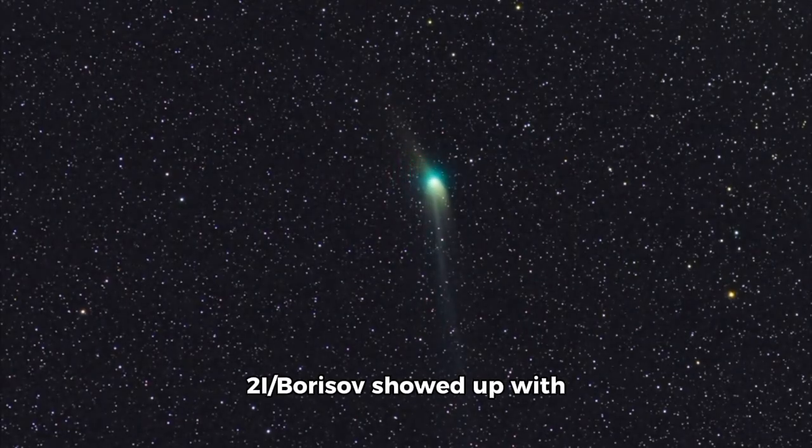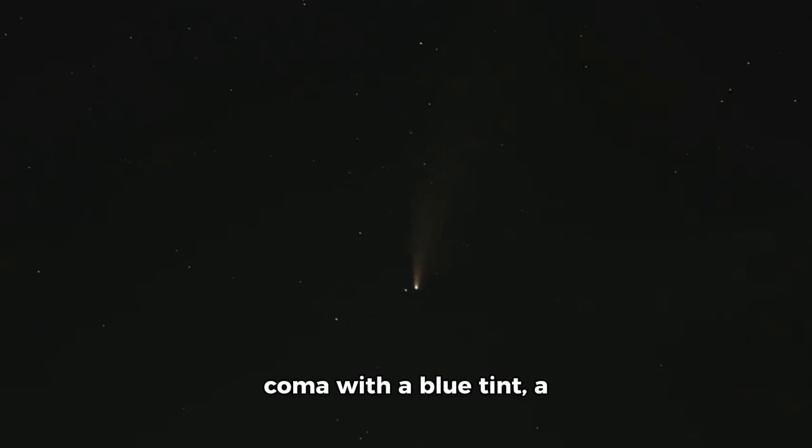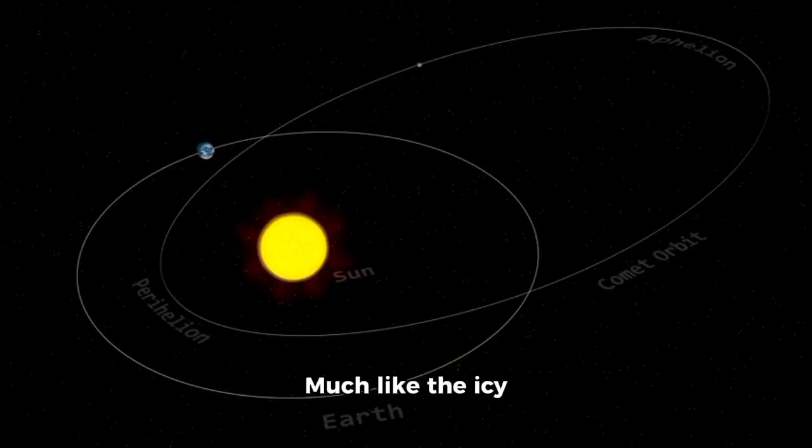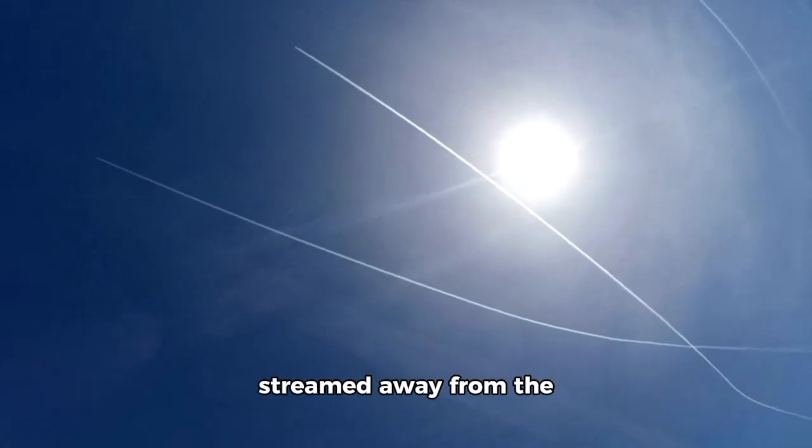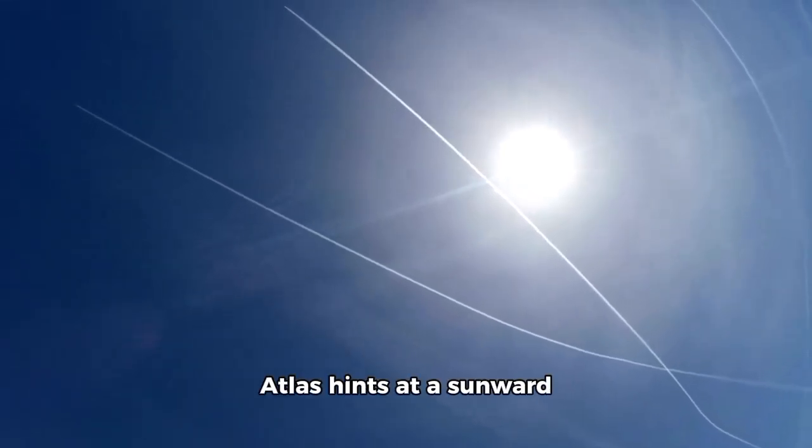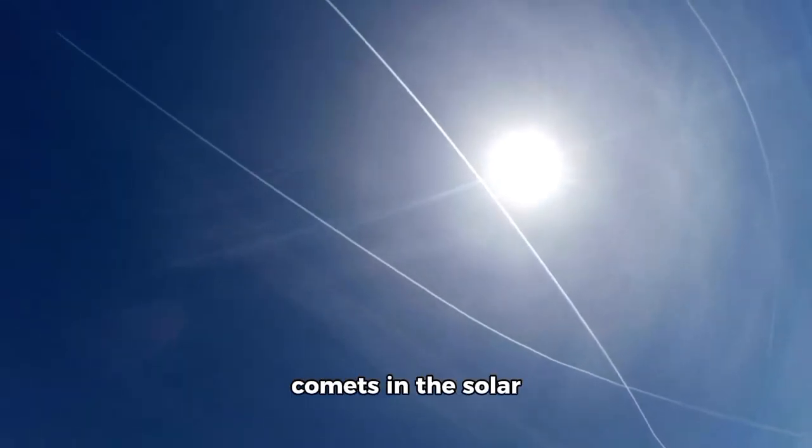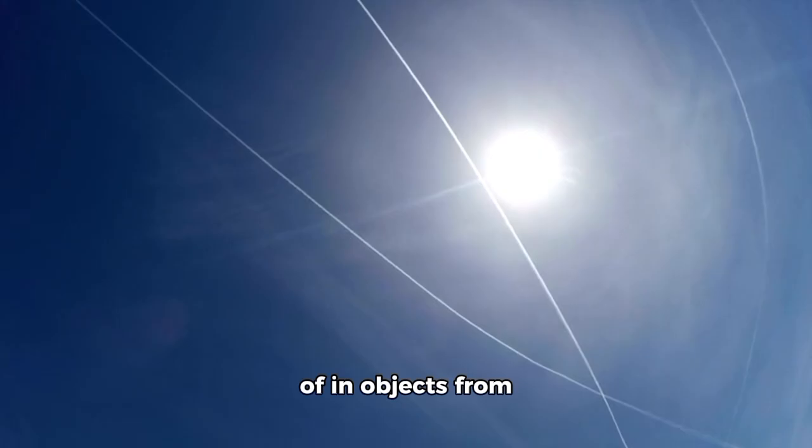Three years later, 2I/Borisov showed up with all the hallmarks of a classic comet, a bright coma with a blue tint, a typical dust trail, and a chemical signature dominated by water and cyanide. Much like the icy wanderers that orbit the sun every few centuries, 3i Atlas, though, refuses to fit neatly into either category. Not only is its coma extensive, but it's unusually green because of the strong diatomic carbon emission not seen at this intensity in most solar system comets. The sudden increase in brightness six-fold above prediction has no parallel in either Oumuamua's muted passage or Borisov's steady rise. And while Borisov's tail streamed away from the sun as expected, 3i Atlas hints at a sunward anti-tail, a feature more familiar from the rarest comets in the solar system but nearly unheard of in objects from interstellar space.